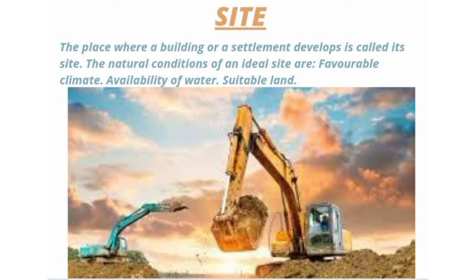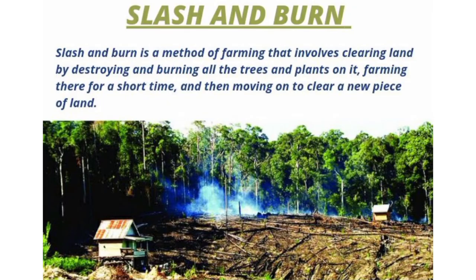Slash and burn. Slash and burn is a method of farming that involves clearing land by destroying and burning all the trees and plants on it, farming there for a short time, and then moving on to clear a new piece of land.